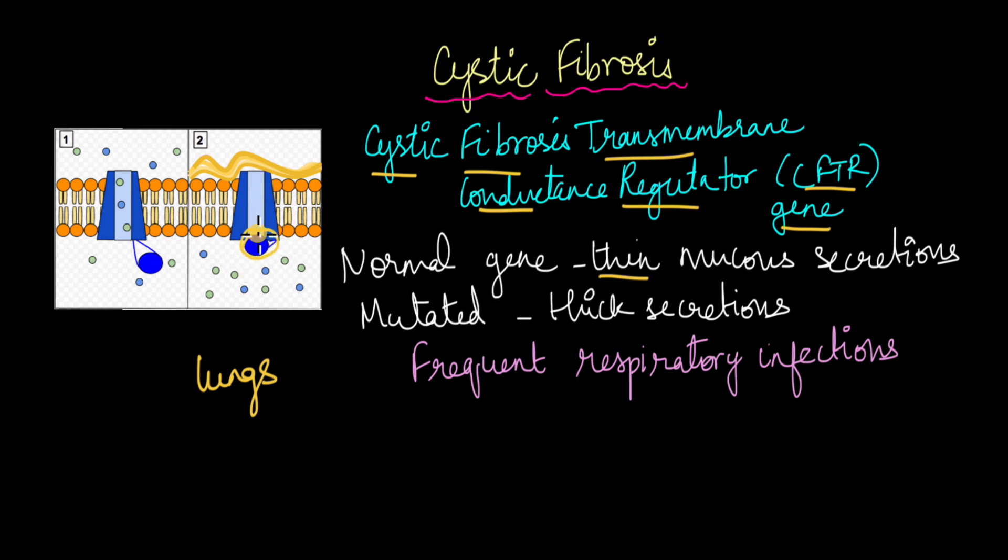You can see right here that it is blocked. Because of this, the mucus secretions in the lung end up becoming thick. Now this doesn't affect just the lungs. It also affects any organ where there is secretion, like the stomach, even the intestines, and also organs like the liver. But the primary organ that is affected because of cystic fibrosis is the lungs.